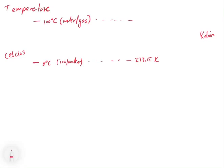And then all the way up here we have 373.15 Kelvin, which is where the water will boil and turn into a gas or go back. So that's the Kelvin scale.